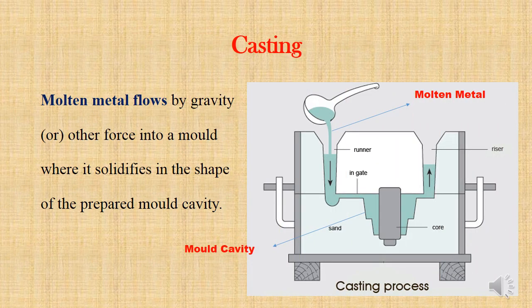Casting is one of the oldest and cheapest methods, gives high strength and rigidity even to very thin or complicated parts which are difficult to produce by other methods of manufacturing. Here in this diagram we can see first mold cavity is prepared in shape of final product what we required, and then molten metal is poured into that and then it is allowed to solidify. By this we can understand the casting process.